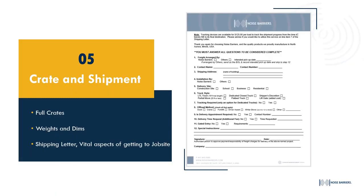When everything is crated and ready to ship, your project manager will have sent a shipping letter asking for truck style, tracking requirements, dock door availability, crane or fork truck on site, address, and who's providing installation. This document tells us everything we need to set up the freight for the load. The sooner we have it, the more ahead of time we are in scheduling and getting the best rate possible. If freight is being handled by the customer, we can send weights and dimensions so the customer can coordinate the pickup and delivery.